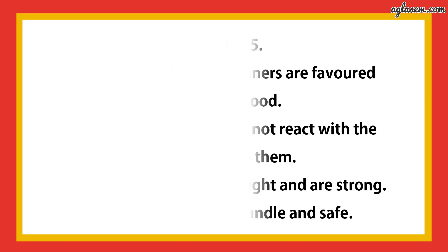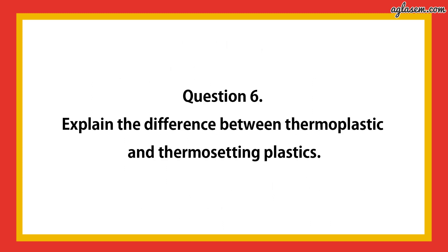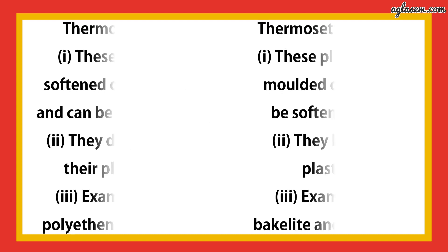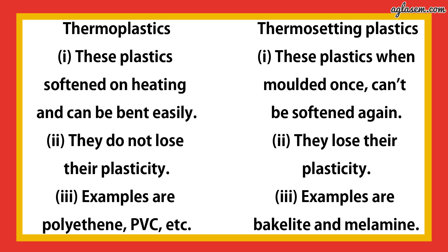Question number 6: explain the difference between thermoplastic and thermosetting plastic. Thermoplastic — these plastics soften on heating and can be bent easily, and they do not lose their plasticity. Whereas thermosetting plastic — these plastics, once moulded, cannot be softened again, and they lose their plasticity.